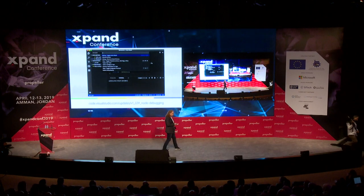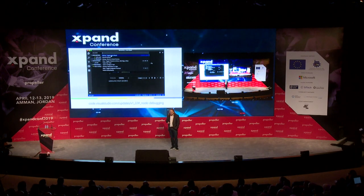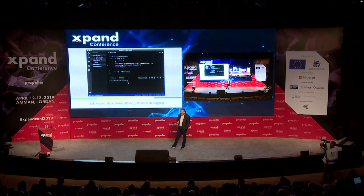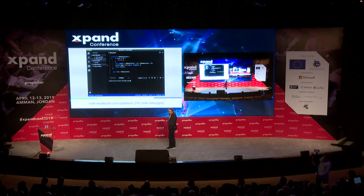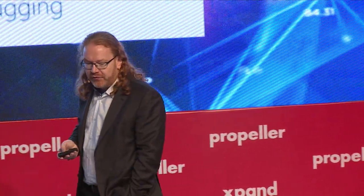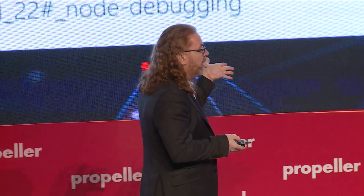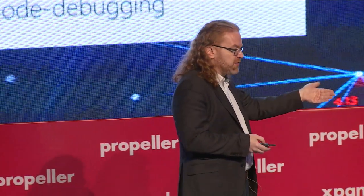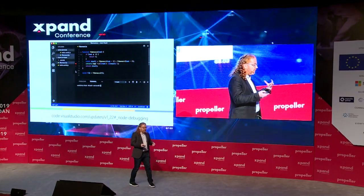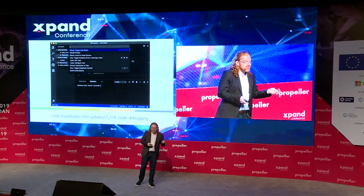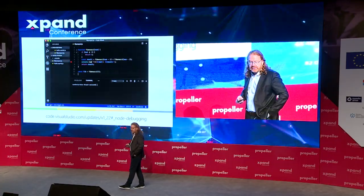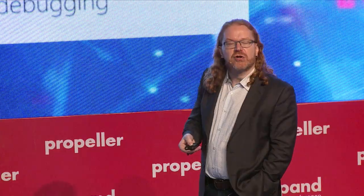VS Code does all the breakpoint debugging for you as well. You can run a Node process in the background — it finds a problem, goes to the breakpoint, and gives you full inspection of the Node process running in the background. This could also be a browser process — anything that gives back information via the debugging protocol, because that's built inside the editor. You never have to leave the editor anymore, except for tweeting and looking at cat pictures.